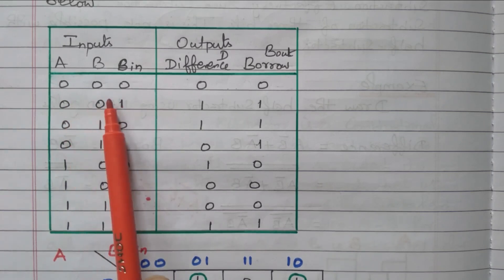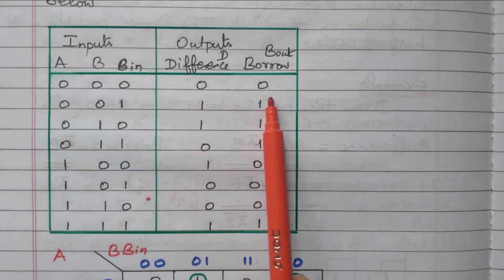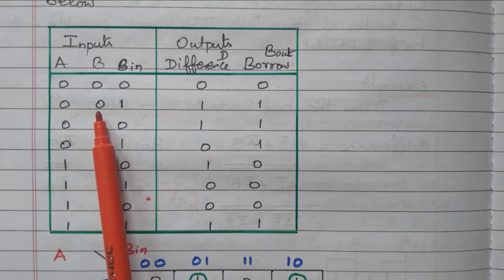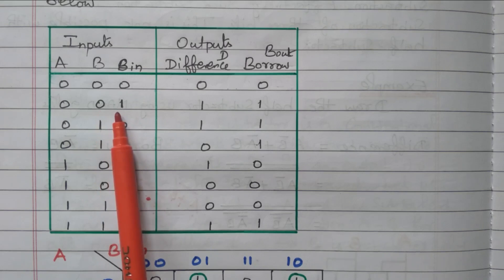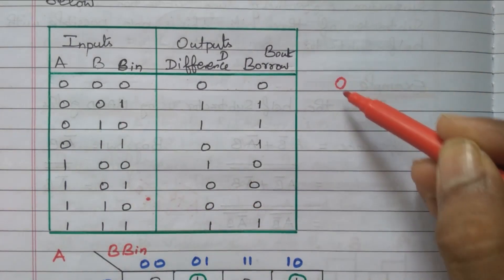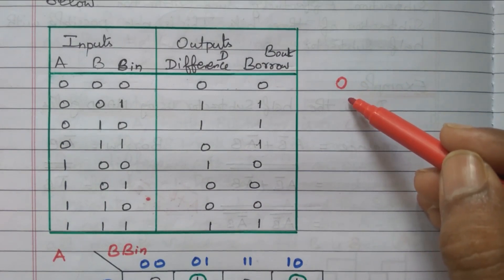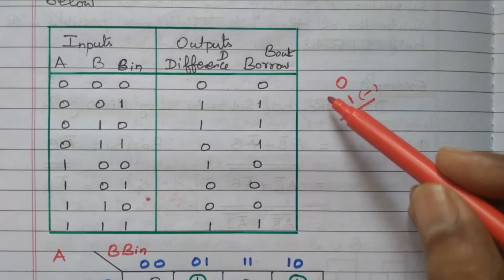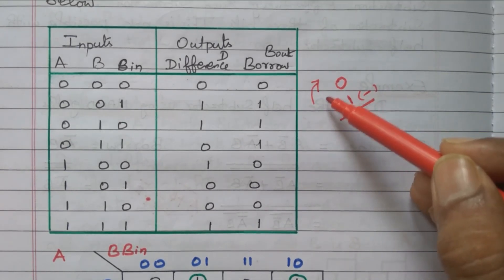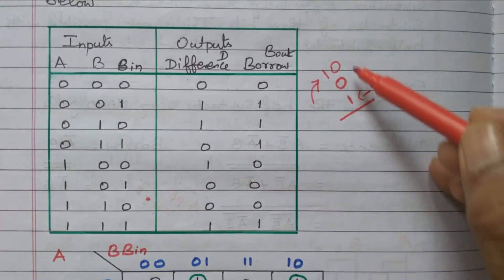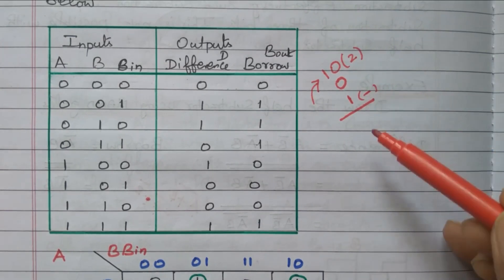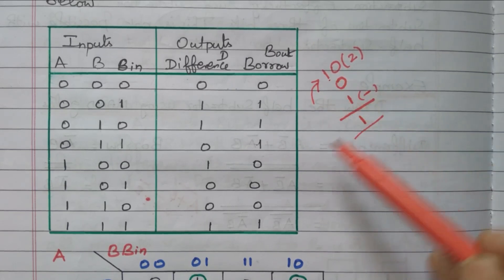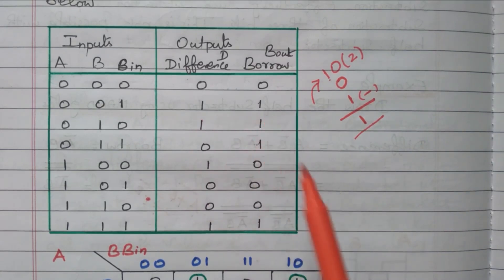For 0 0 0, all inputs are 0, so the difference is 0 and borrow is 0. For 0 0 1: 0 minus 0 is 0, but then 0 minus 1 — the first number is the minimum and the second number is maximum. We need to borrow 1 from the previous digit. While borrowing, the 0 becomes 10 in binary, which is decimal 2. So 2 minus 1 is 1, giving difference = 1 and borrow = 1.